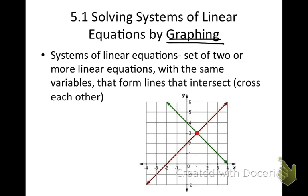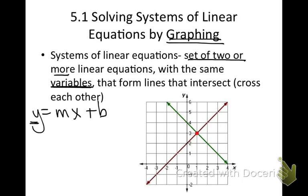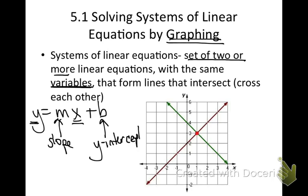Systems of linear equations are a set of two or more — we're going to just stick with two — linear equations with the same variables. Remember, variables are like x and y. We have y equals mx plus b. x and y are our variables, m is our slope, and b is our y-intercept. That's what they mean by systems with the same variables, and they form lines that intersect each other.